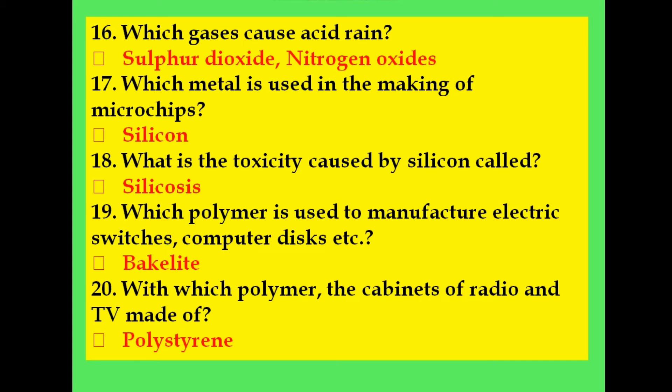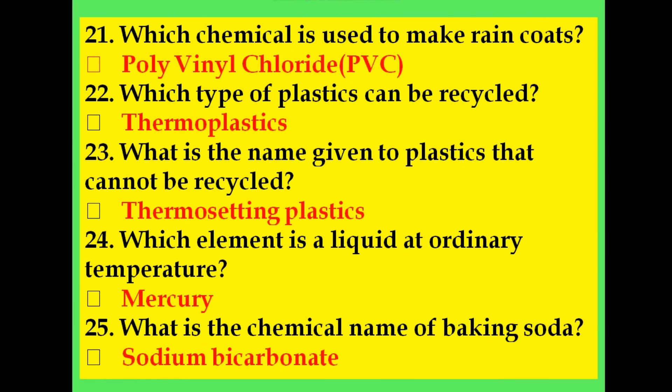What is the toxicity caused by silicon called? Silicosis. Which polymer is used to manufacture electric switches and computers? Bakelite. With which polymer are the cabinets of radio and TV made? Polystyrene. Which chemical is used to make raincoats? Polyvinyl chloride, also called PVC. Which type of plastics can be recycled? Thermoplastics. What is the name given to plastics that cannot be recycled? Thermosetting plastics.